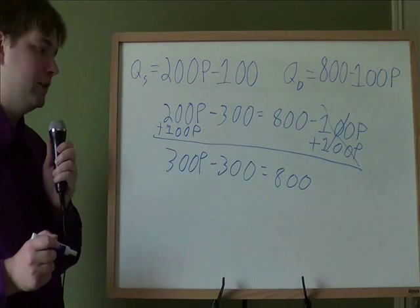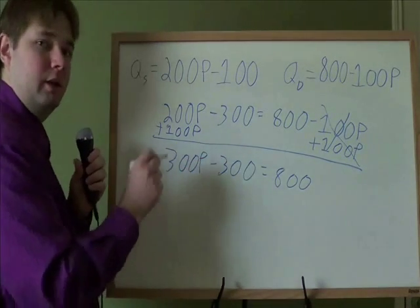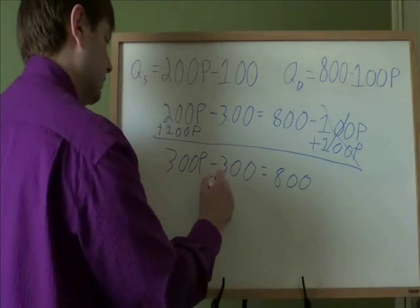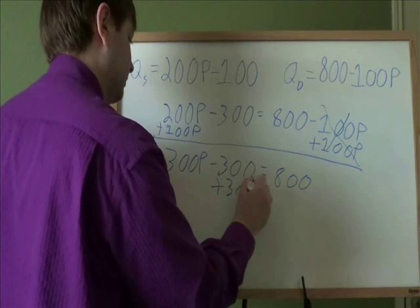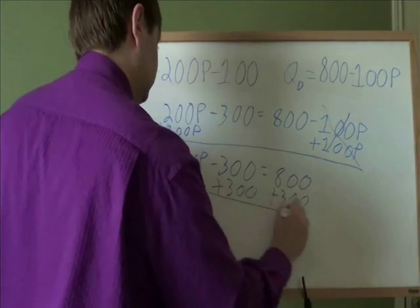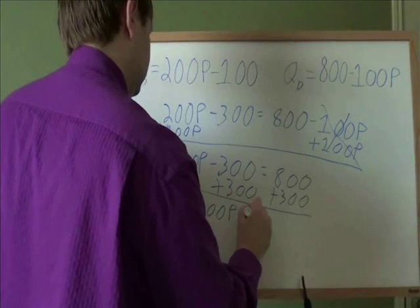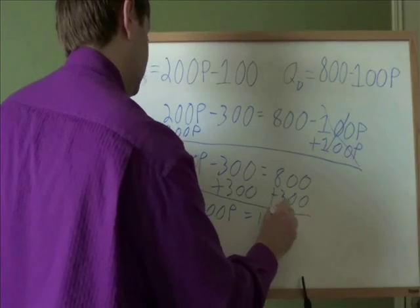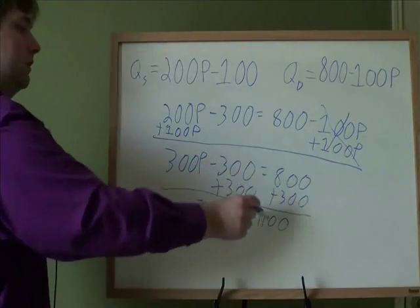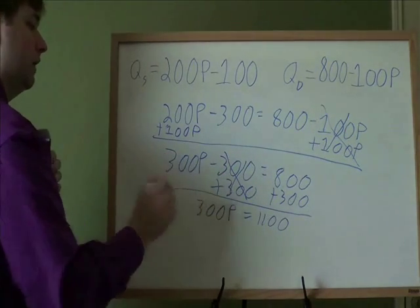And then from there, we need to get that P by itself. So next up, we're going to get rid of this minus 300. To get rid of minus 300, we use its opposite, plus 300. So, 800 plus 300 gives us 1,100, those 300s cancel out, we still have that 300P.